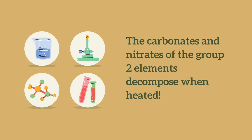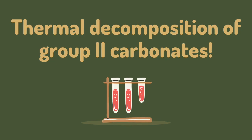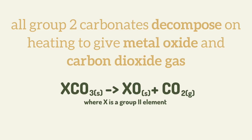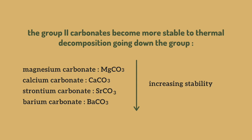Both carbonates and nitrates of the Group 2 elements decompose when heated. All Group 2 carbonates decompose on heating to give metal oxide and carbon dioxide gas. The formula of this reaction is shown on the screen where X is the Group 2 element. As you go down the group, the carbonates have to be heated more strongly before they will decompose, because the carbonates become more stable to heat.